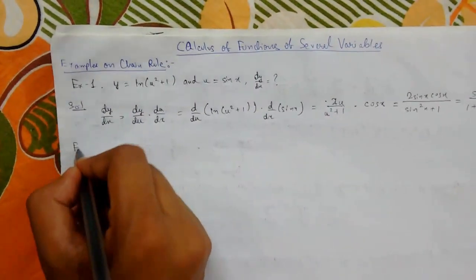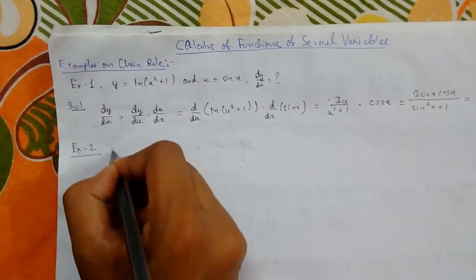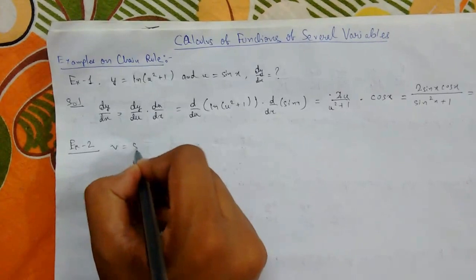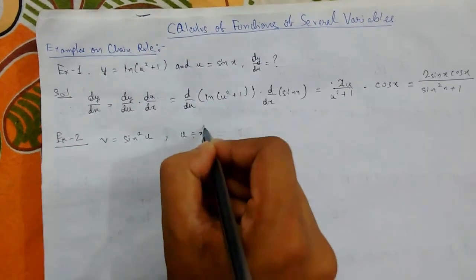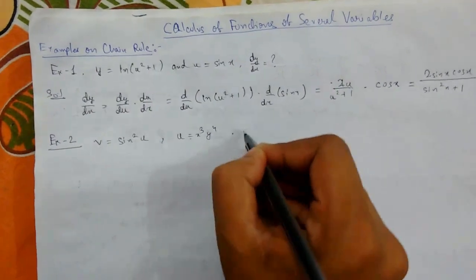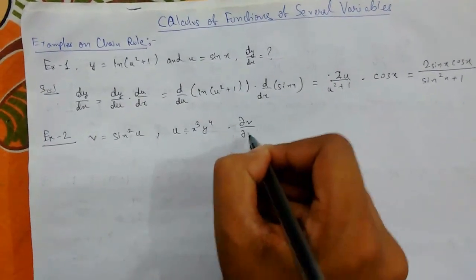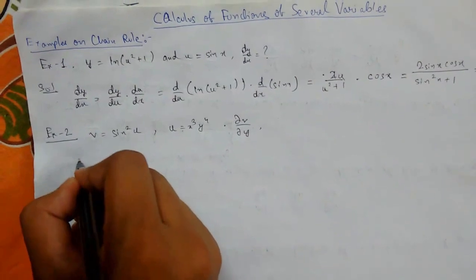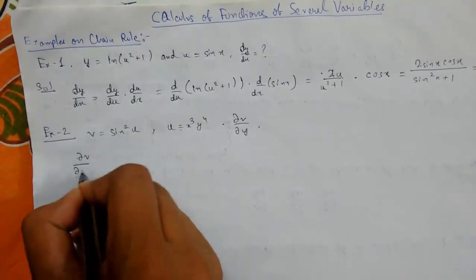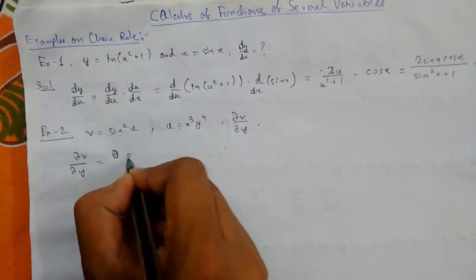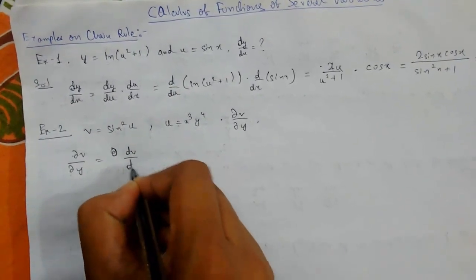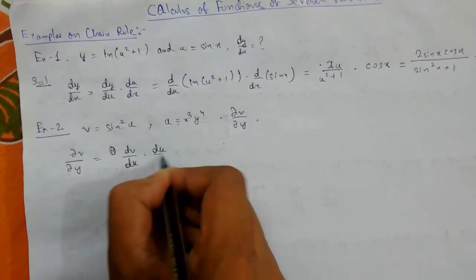Let us see another example. Suppose we have v = sin²(u) where u = x·y⁴. We need to find ∂v/∂y. From chain rule we know that this will be dv/du times du/dy.